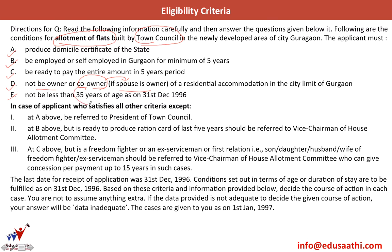Not be less than 35 years of age as on 31st December 1996. In case the applicant satisfies all other criteria except A — meaning he is not able to produce a domicile certificate of the state — then the applicant should be referred to the president of the town council. If he satisfies all criteria except B, but is ready to produce a ration card of five years, then the applicant should be referred to the vice chairman of the house allotment committee.